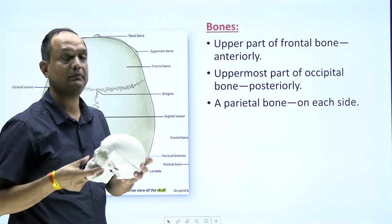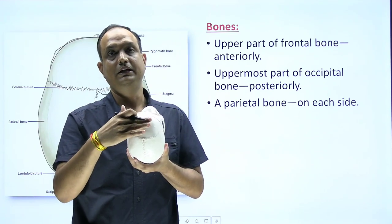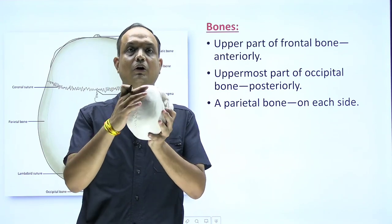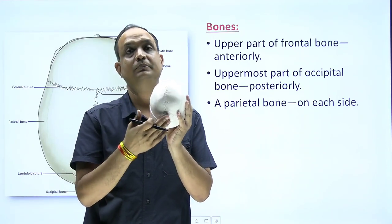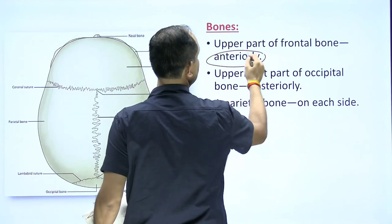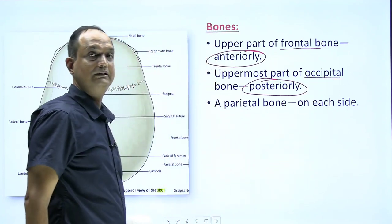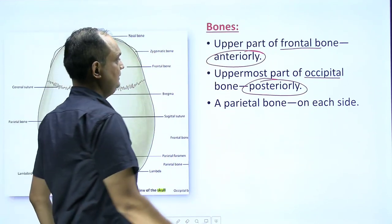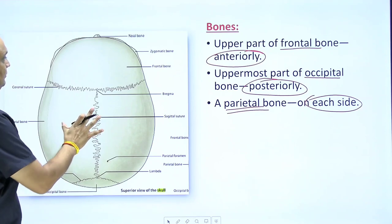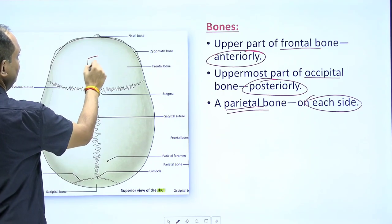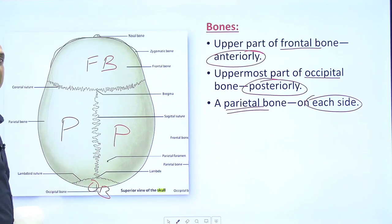Now what are the bones you will come across in this view? In this view, you will have the frontal bone anteriorly. On both sides, you are having the parietal bones. Posteriorly you will have the occipital bone. These are two single bones — frontal anteriorly and occipital posteriorly. But there is one pair of parietal bones: right and left parietal bone.